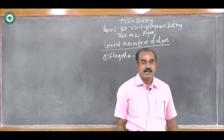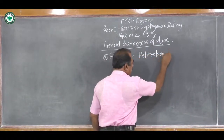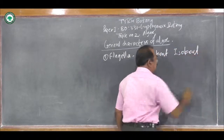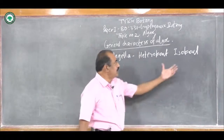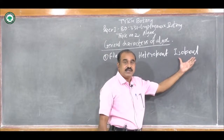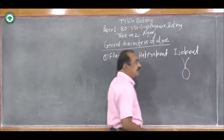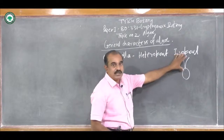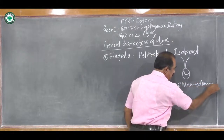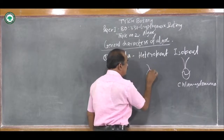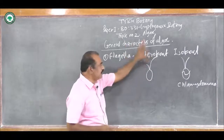In Algae there are different types of Flagella. For example, Heterocont Flagella and Isocont Flagella. The Flagella which are unequal in length are called as the Heterocont Flagella, and Flagella which are equal in length are called Isocont. For example, in Chlamydomonas, both Flagella are equal, so they are called Isocont Flagella. When one is small and another is very large, such Flagella are called Heterocont Flagella.